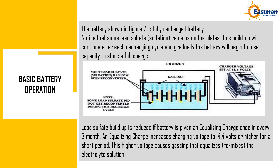Notice that some lead sulfate remains on the plates after recharging. This buildup continues after each recharging cycle and gradually the battery loses capacity to store a full charge. Lead sulfate buildup is reduced if the battery is given an equalizing charge once every three months. An equalizing charge increases charging voltage to 14.4 volts or higher for a short period. This higher voltage causes gassing that equalizes and remixes the electrolyte solution.